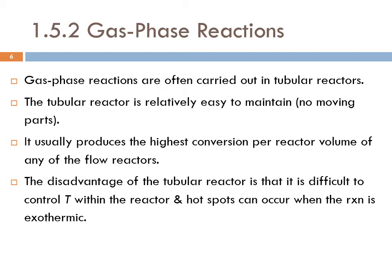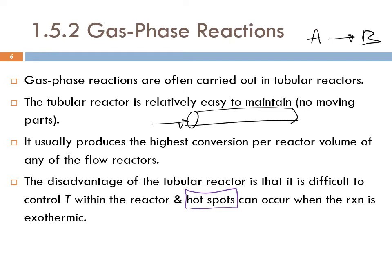The disadvantage of the tubular reactor is that it is difficult to control temperature within the reactor, and hot spots can occur when the reaction is exothermic. In a plug flow reactor, consider a simple reaction A → B that is highly exothermic. At the beginning of the reactor you have a high concentration of A.